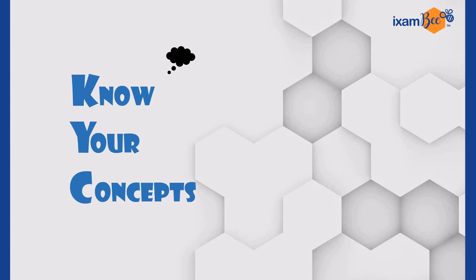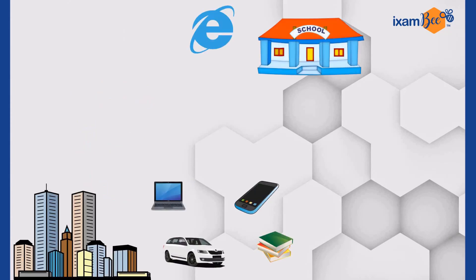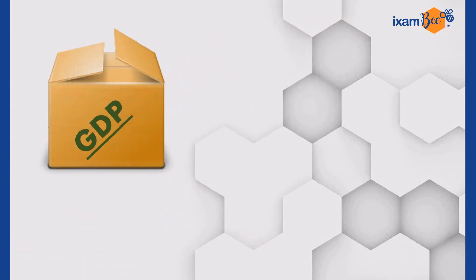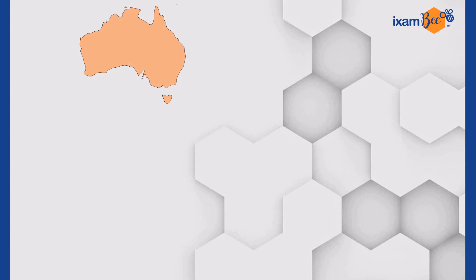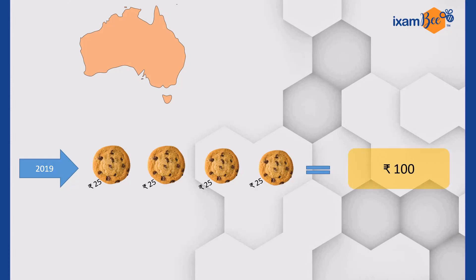Before starting on real GDP and nominal GDP, you must know what GDP is. If you have not watched our video on GDP yet, you can find the link at the 'i' button. Just to recap, GDP is the combined value of all finished goods and services produced in a country during a year. For example, in a hypothetical situation, Australia produced only four cookies in the year 2019. If the value of each cookie is 25 rupees, the total GDP of Australia for that year will be 25 × 4 = 100 rupees.